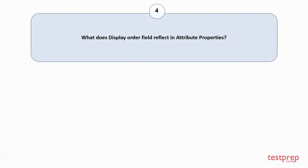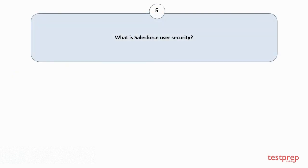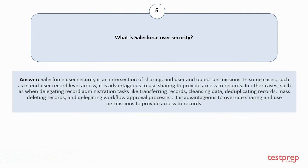Question number four: What does the display order field reflect in attribute properties? The display order field reflects the attribute's placement among the profile attributes when displayed to subscribers in the Profile Center, and also when displayed within the application in attribute drop-down lists for personalization in emails and for group creation.